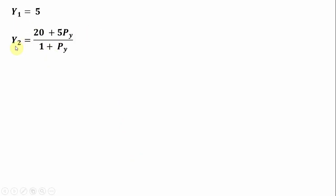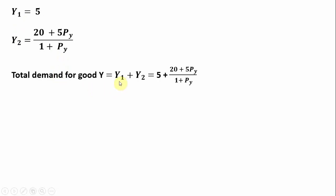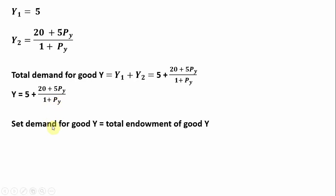Let's write the demand for good y for consumer 1 and consumer 2, and get the total demand for good y. Total demand is y1 plus y2. We're going to set that total demand for good y equal to the total endowment of good y, which is 15 — consumer 1's initial endowment of y plus consumer 2's initial endowment of y. Then we solve for the price of good y.